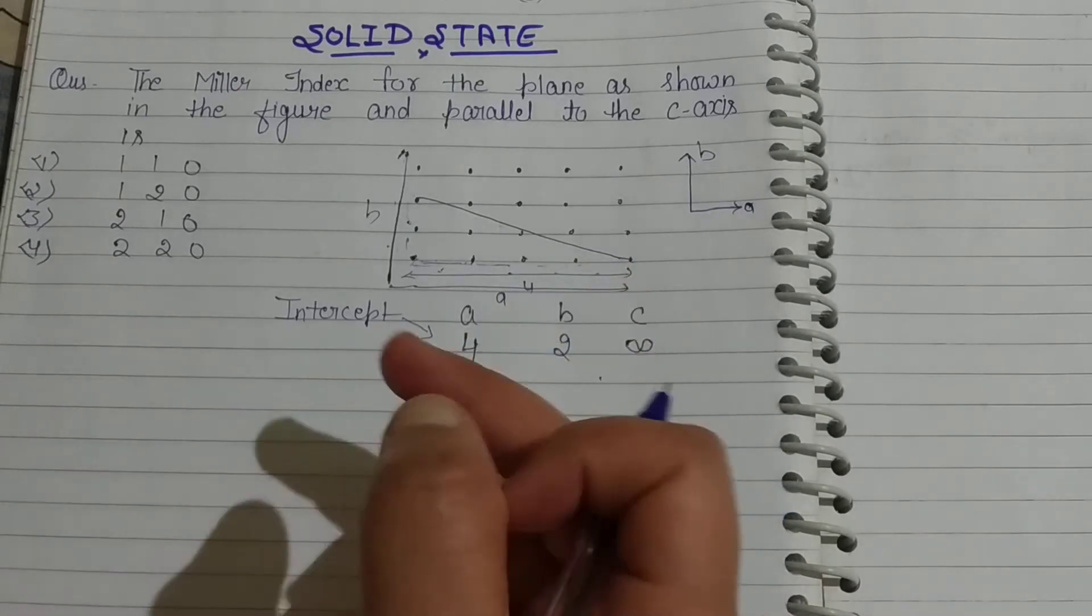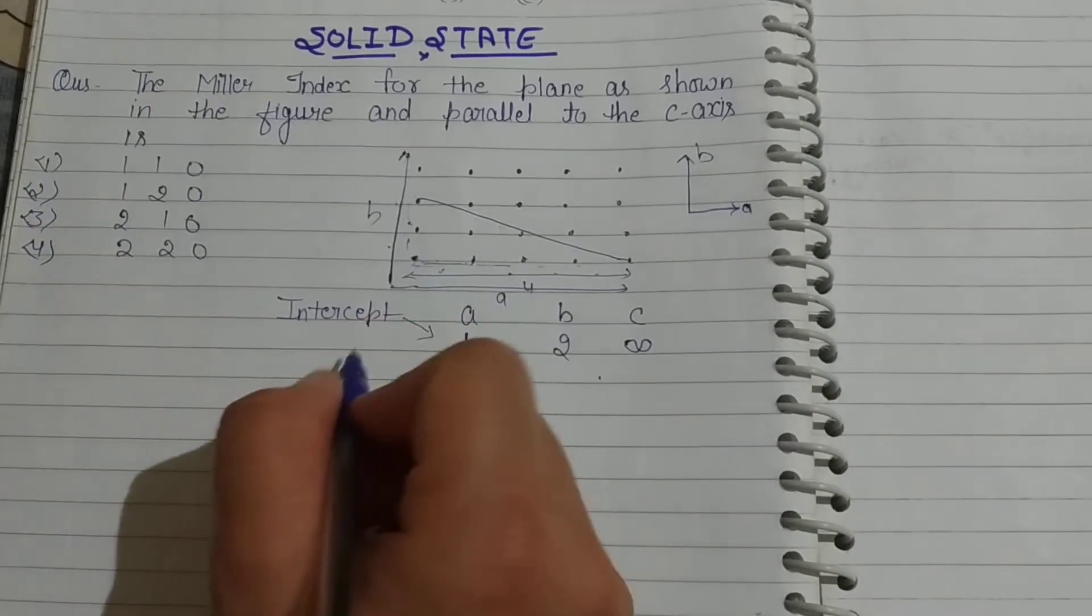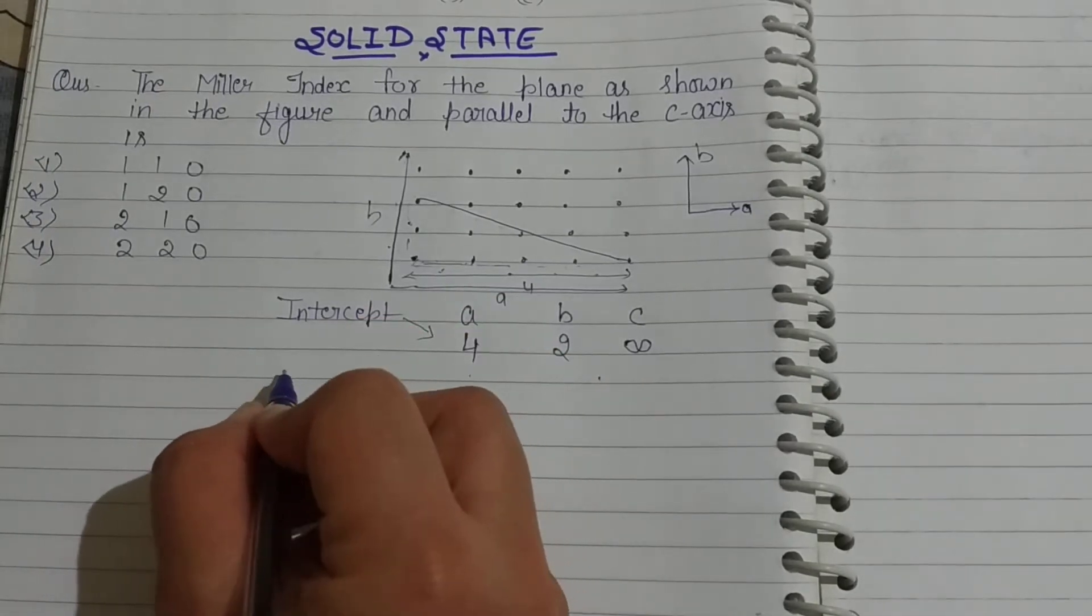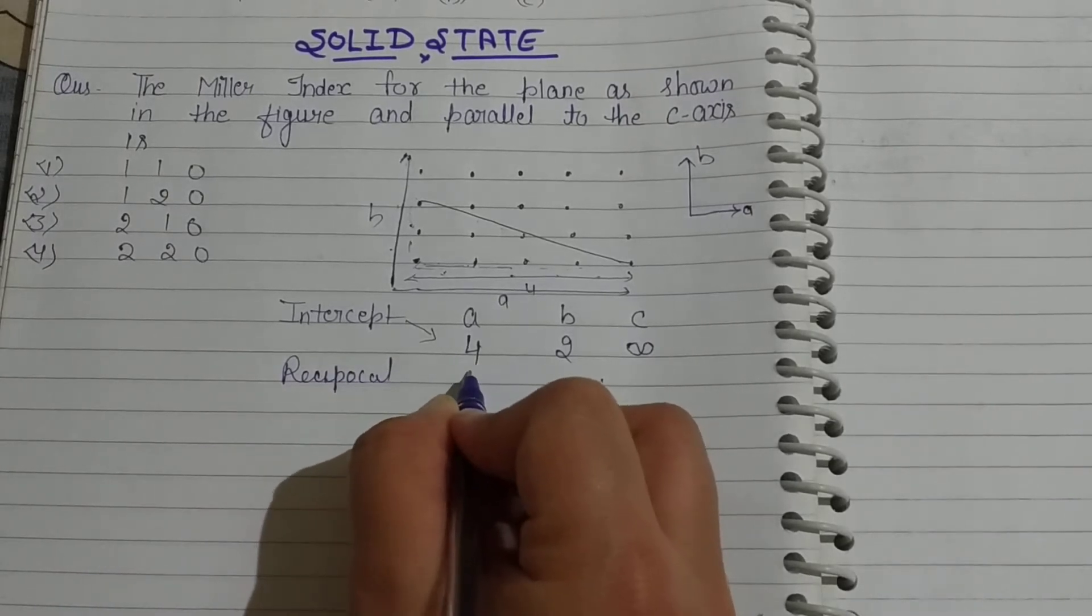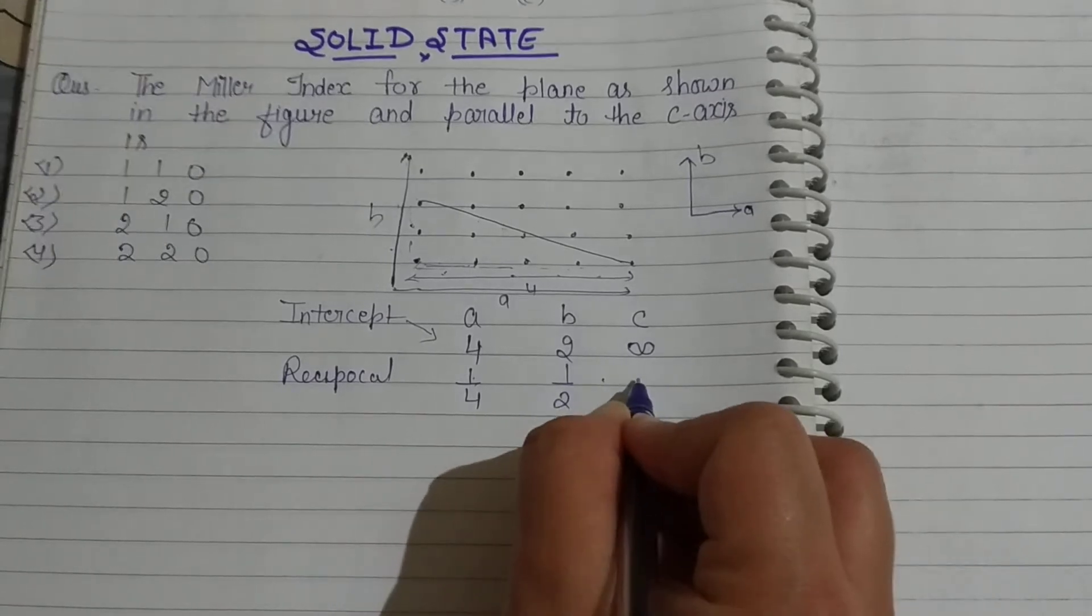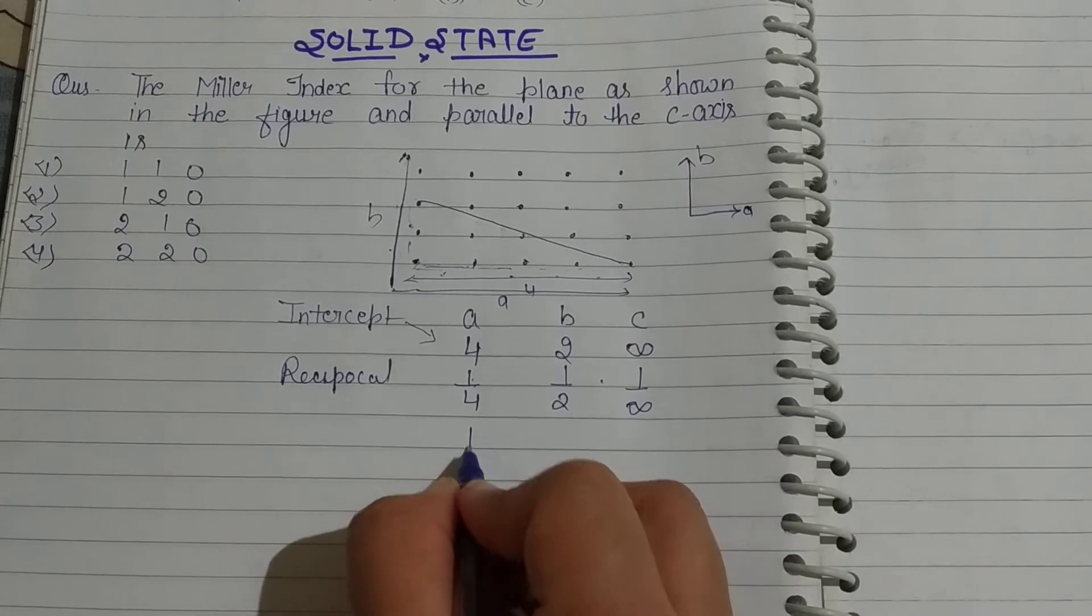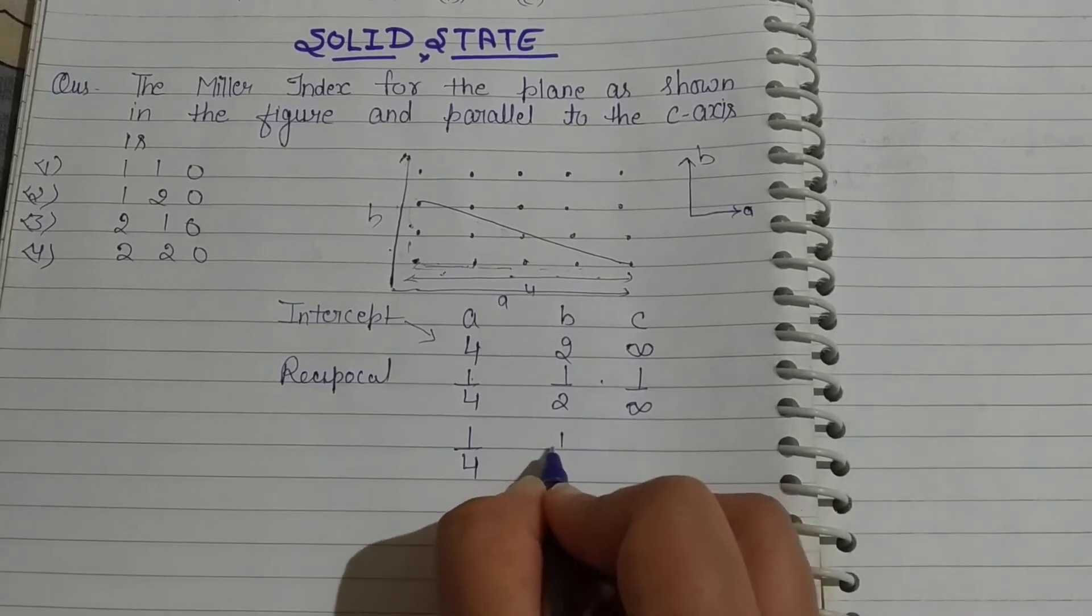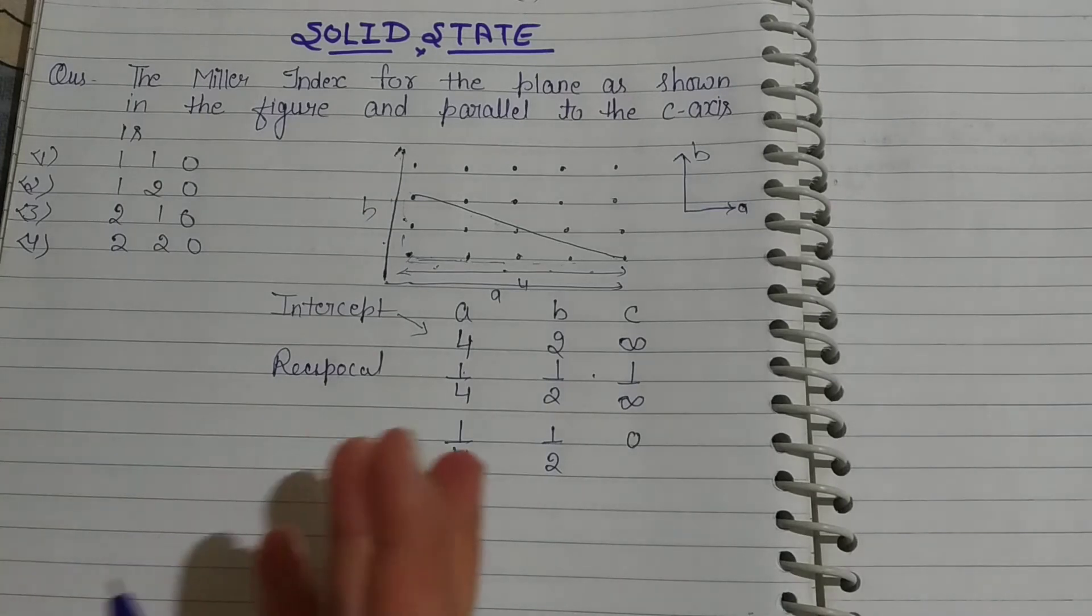Okay, so we have the intercepts. Second point: intercept. And on the next point we have to take the reciprocal. We take the reciprocal. What will happen to this? 1/4, 1/2. And 1 by infinity, so we can write this as 0.